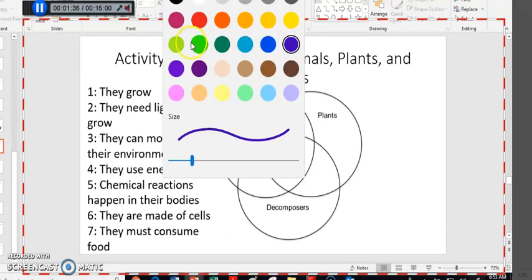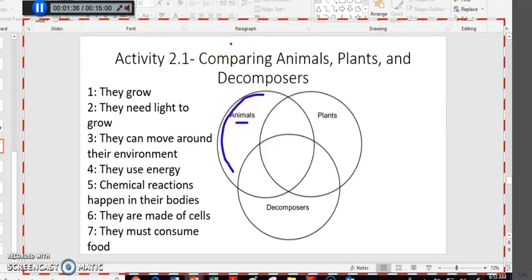But if you're out here, you're talking only about plants. And if you're out here, that means you're talking about only decomposers. Now, if you are here, it means you're talking about animals and decomposers. If you're here, it means plants and decomposers. Here means animals and plants. And then if you're in the middle, that means that we're talking about all three of them. So, that's how this triple Venn diagram works.